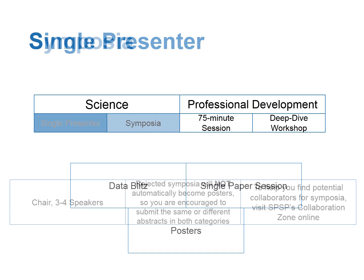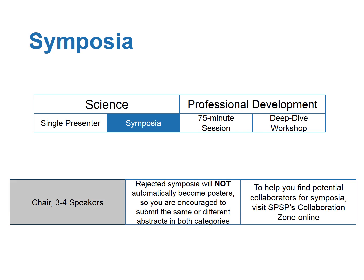Symposia must include a chair and three to four speakers. Note that rejected symposia talks will not automatically become posters, so you are encouraged to submit the same or different abstracts in both categories.